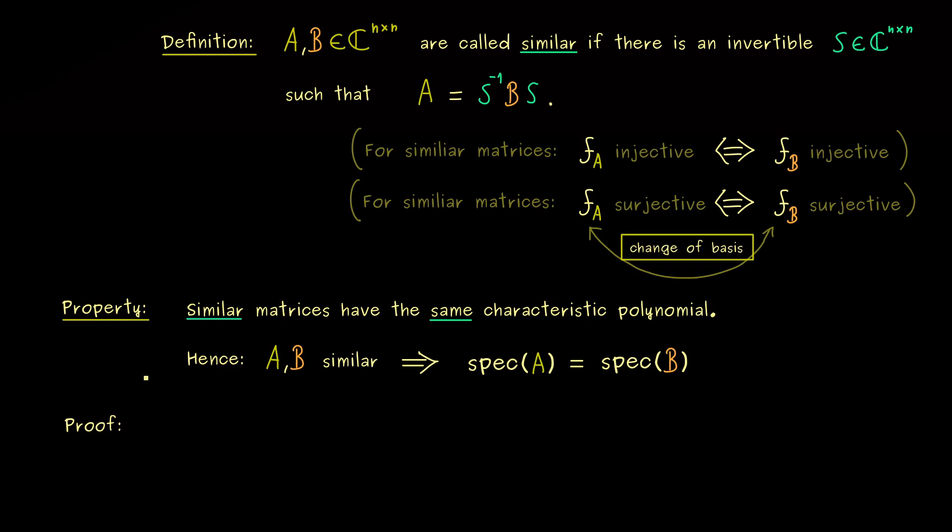And maybe, I can already give you a little spoiler, they will also not change under this transformation. So the dimensions of the eigenspaces will not change, but the eigenspaces themselves could change. However, as we have stated here, first we want to talk about the characteristic polynomial.